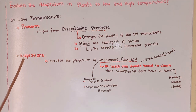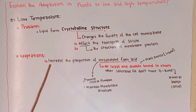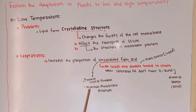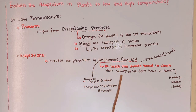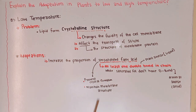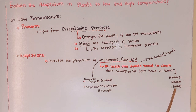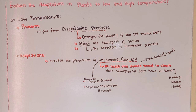The most important adaptation is the increase in the proportion of unsaturated fatty acids. Unsaturated fatty acids have at least one double bond in the fatty acid chain, whereas saturated fatty acids have no double bonds. Saturated fatty acids come from animal sources and become solid at room temperature, while unsaturated fatty acids come from plant sources and remain liquid at room temperature. Unsaturated fatty acids prevent crystal formation.